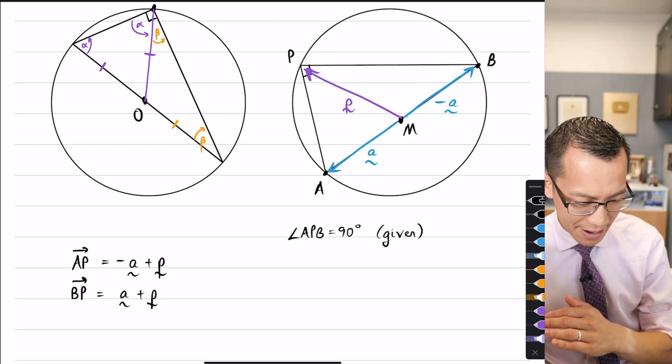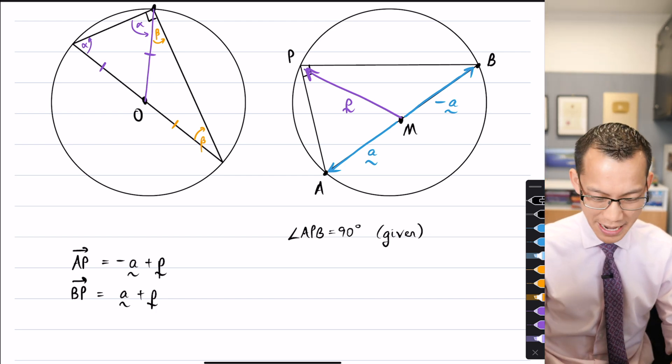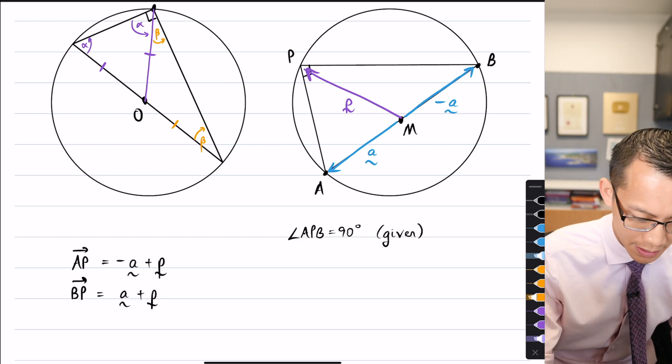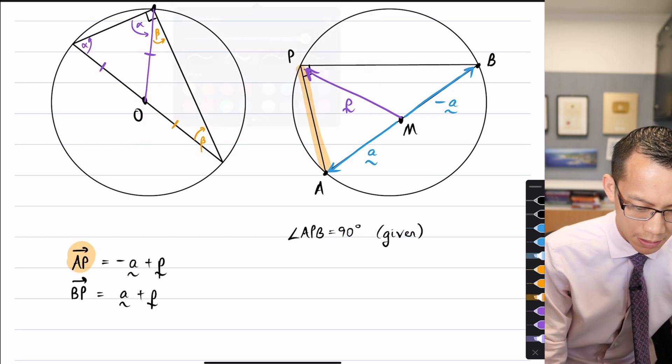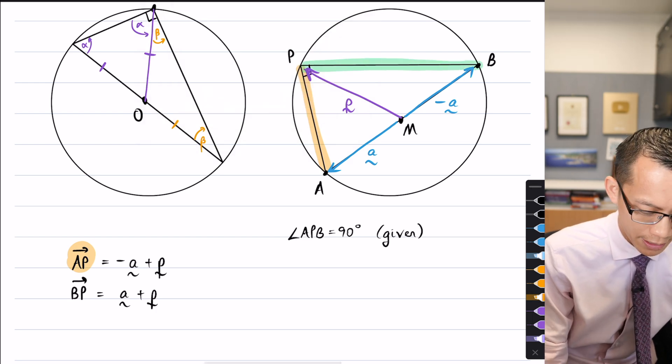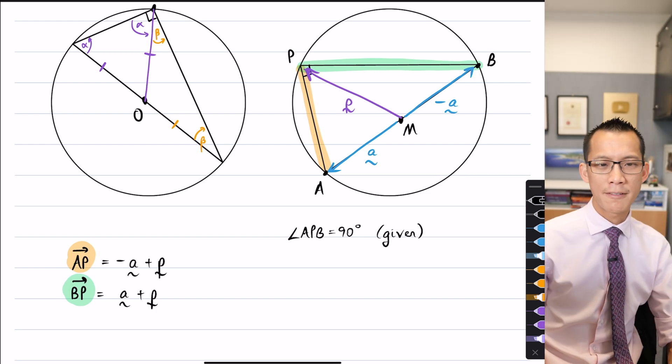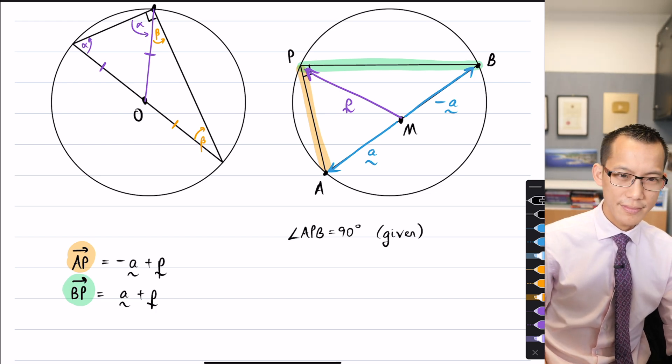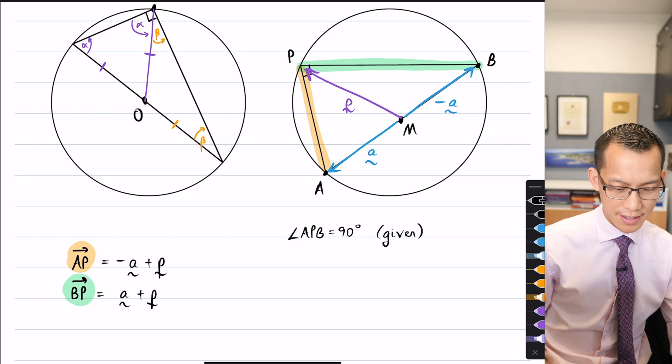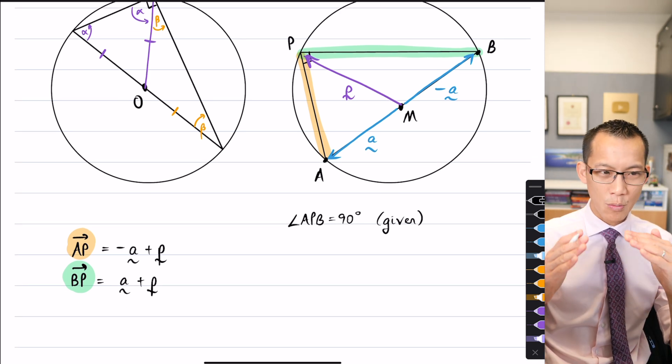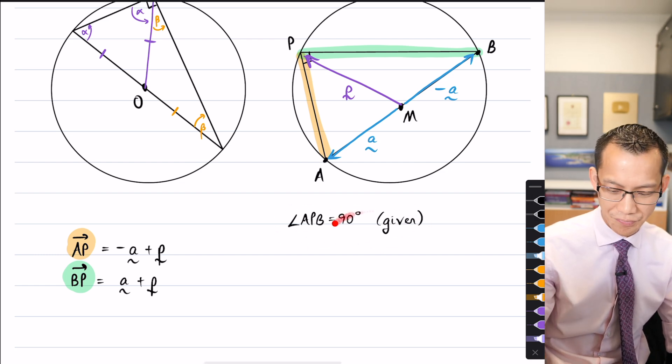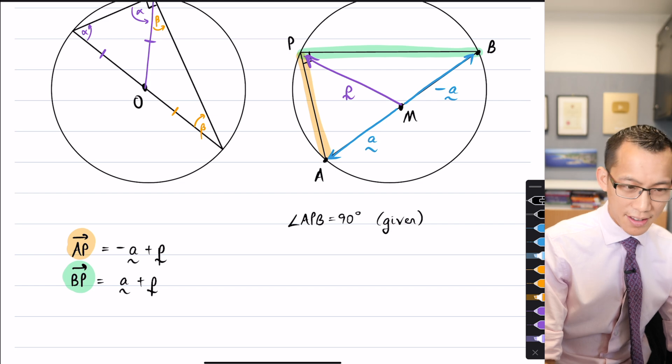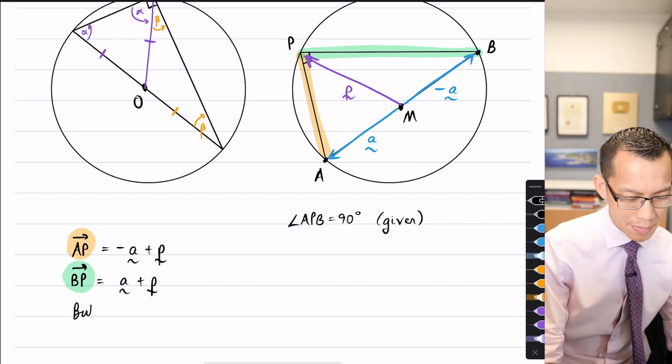Now, the reason why I care about ap and bp, let's just highlight those. Here's ap in orange, and then bp up here in green. What's the relationship between ap and bp again? What I started with was, what's given is that there's 90 degrees there.